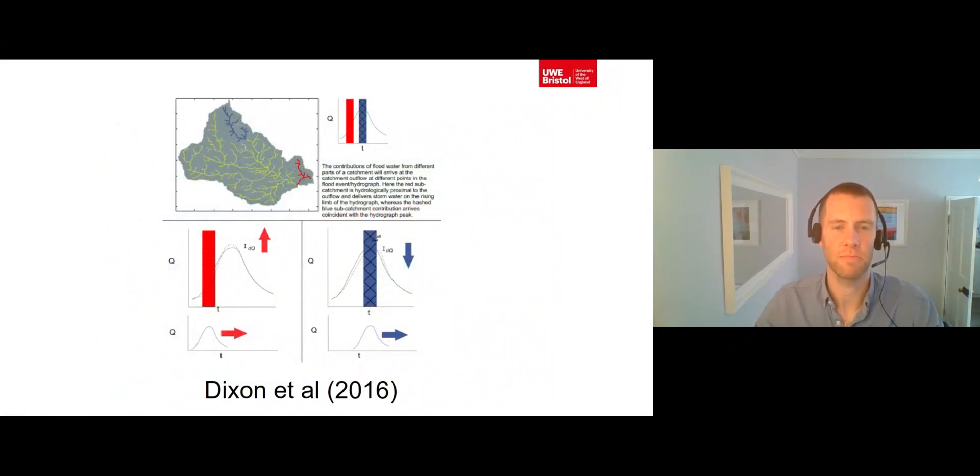However, as shown in research by Dixon et al. in 2016, we need to be really careful about where in the drainage basin we apply these management techniques. If we apply techniques that slow down the arrival of water from hill slopes near the catchment outlet, like this area shown in red, this may cause that water, which previously would have formed an early part of the rising limb of the hydrograph, to be delayed so that it now arrives at the same time as the main flood peak, as shown in this graph on the left. This would actually increase the likelihood of flooding.